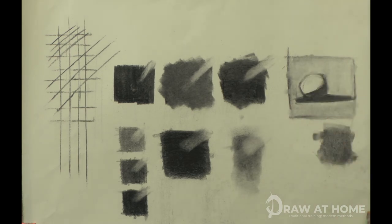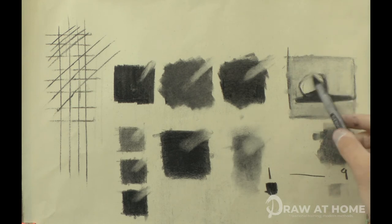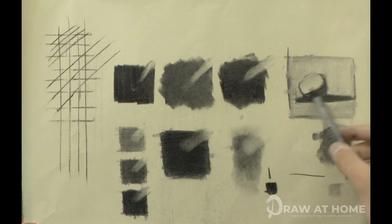Next, use the stump again to find a light value in the light of the sphere. To find a nice contrast between the sphere and the background, I load up the stump with charcoal and then add that to the background, using my finger sometimes to blend in the charcoal.